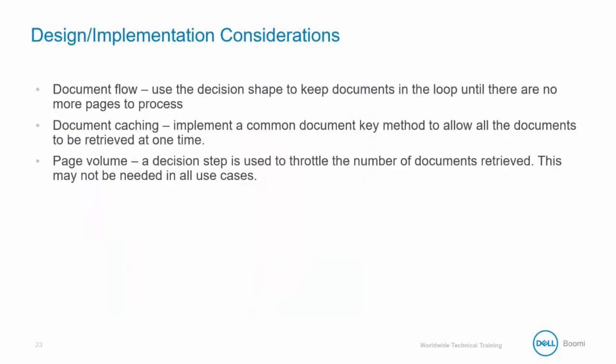There are a few design and implementation considerations to cover. Use the decision shape to keep documents in the loop until there are no more pages to process. With a document cache, implement a common document key method to allow all documents to be retrieved at one time. For page volume, consider using a decision shape to throttle the number of documents retrieved.